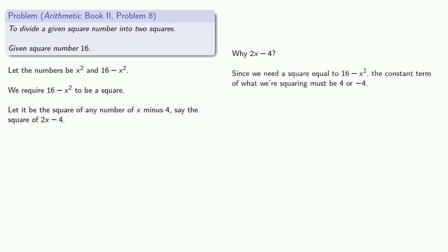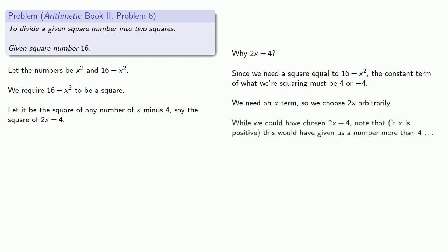Since we need a square to equal 16 minus x squared, the constant term of what we're squaring must be 4 or negative 4. We need an x term, so we choose 2x arbitrarily. While we could have chosen 2x plus 4, note that if x is positive, this would have given us a number more than 4. But we want two squares that add to 16, so both have to be less than 4. So we'll want to use 2x minus 4.